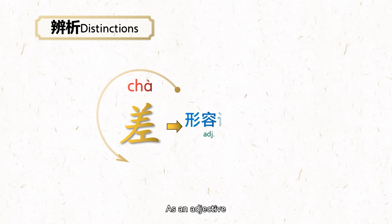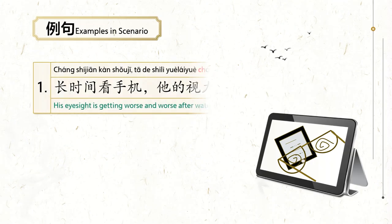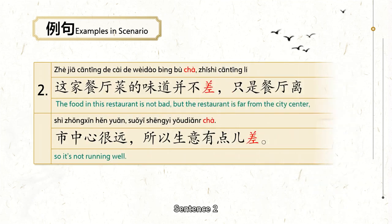As an adjective, its first meaning is bad, unsatisfying, or not reaching requirements. For example, 长时间看手机,它的视力越来越差.